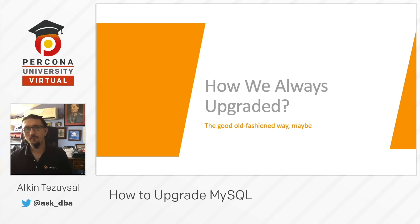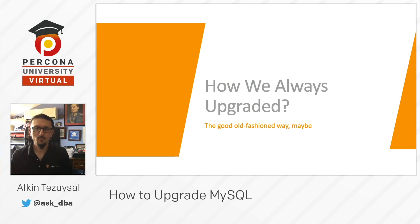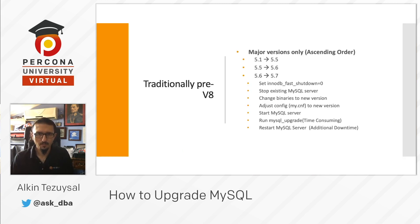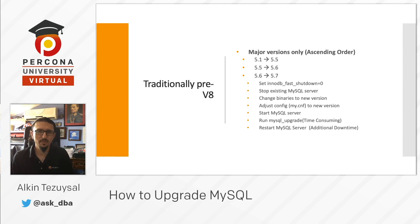Next up, how we always upgraded MySQL and what are the differences on MySQL 8 upgrade. Traditionally, we've upgraded between major versions from 5.1 to 5.5, 5.5 to 5.6, 5.6 to 5.7 by setting InnoDB fast shutdown to 0.